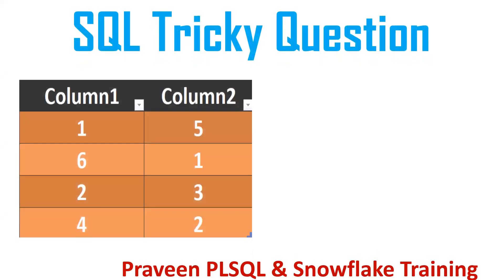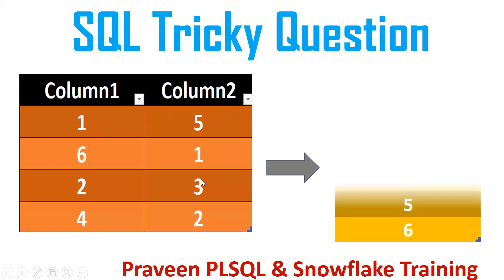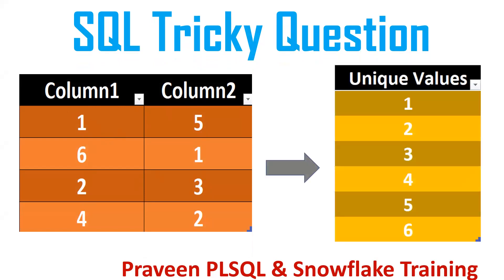This is my input. It is having one table with two columns — column 1 and column 2. It is having records like 1, 6, 2, 4, 5, 1, 3, 2. My requirement is that I want to get unique values. I want to club column 1 and column 2 and get the unique values: 1, 2, 3, 4, 5, 6.